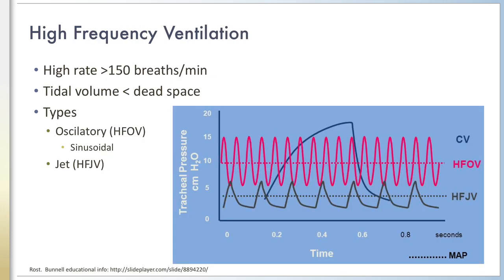High-frequency ventilation is defined as any ventilation strategy that uses a high rate of breaths, traditionally defined as rates greater than 150 breaths per minute. This high rate results in breaths that are smaller in volume than the dead space in the respiratory and ventilator system. While it may seem unintuitive, consider that animals who pant are able to successfully ventilate via a spontaneous version of this strategy without hypocarbia and syncope.